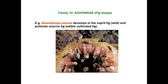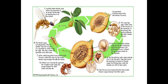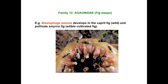Next is Agaonidae — fig wasps. There is a structural difference between male and female: the male is apterous (without wings), while the female is winged and has a long ovipositor. The fore legs and hind legs are stout while mid legs are slender. They live inside the fig and pollinate it — without this wasp, fig fruit cannot be pollinated. Best example is Blastophaga sinensis.